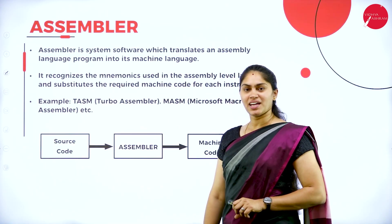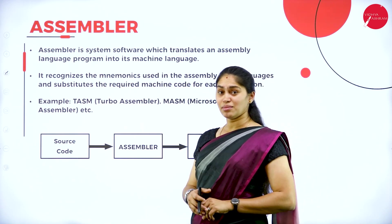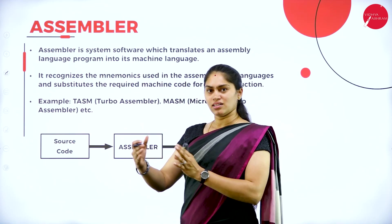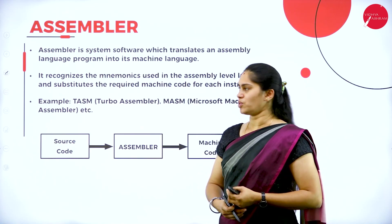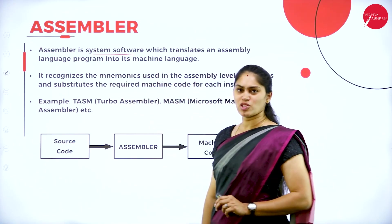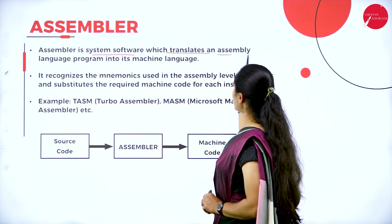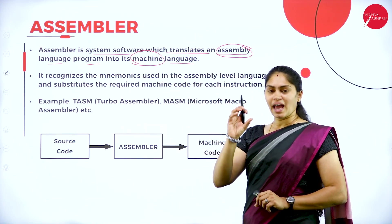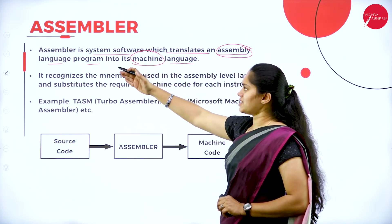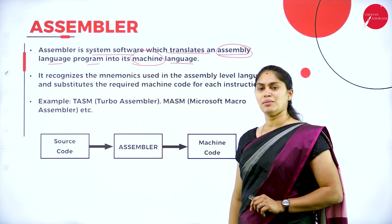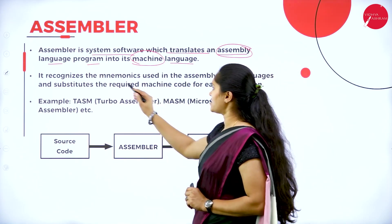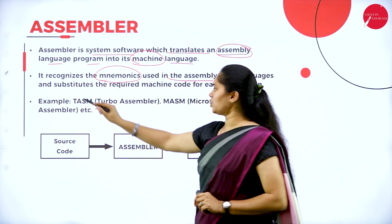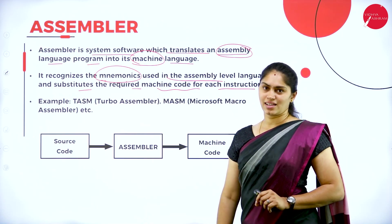We already know about assembly level language, where mnemonics or symbols and alphabets are used to write code. The assembler is a system software that translates an assembly level language program into its equivalent machine language. It recognizes the mnemonics or symbols used in assembly level language and substitutes the required machine code for each instruction.